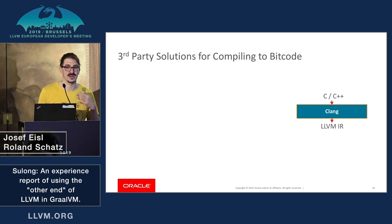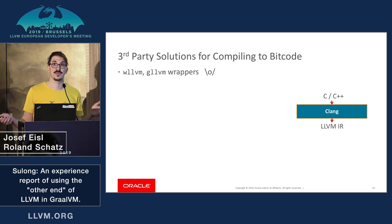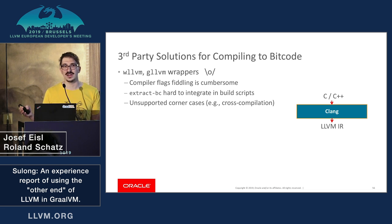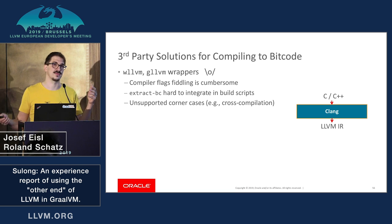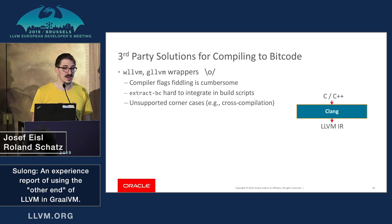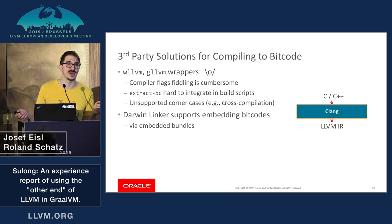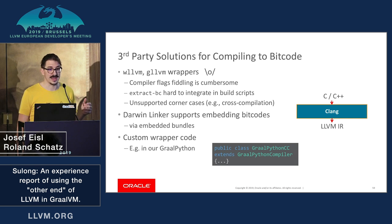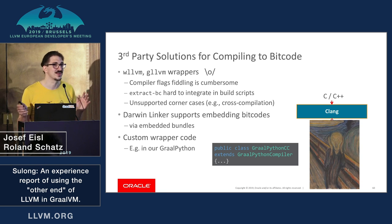We are not the only ones with this problem. There are projects like Whole Program LLVM and GLLVM that we use as wrappers in some of our projects, but they all work around the issue — they try to be smart about compiler flags, figure out when to compile vs. link, and need some kind of extract command to get the bitcode out of the final result. They also don't support all corner cases — for example, cross-compilation is not supported in all of them. It's interesting that the Darwin linker does support embedding bitcode in the final executable via bundle files, so this is just a missing feature on Linux. People tend to write custom wrapper code — we do too, and in our Python implementation you see something like GraalPythonCC, which is code I don't want to see.